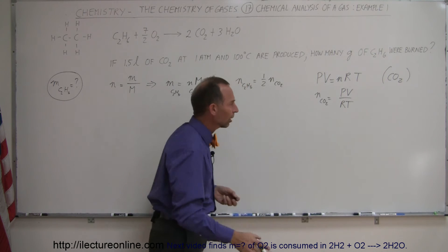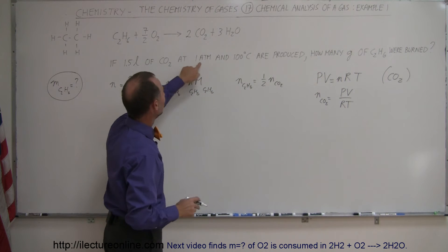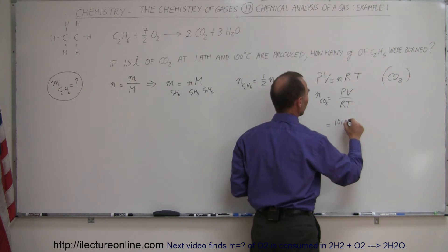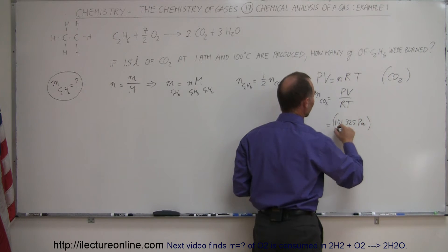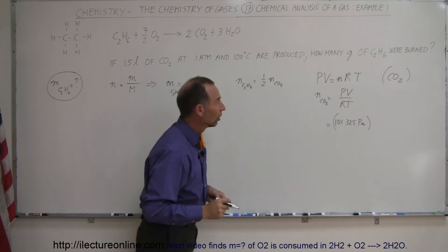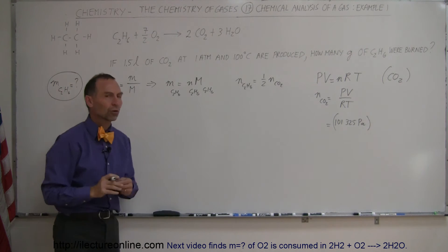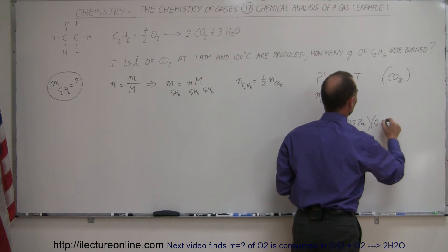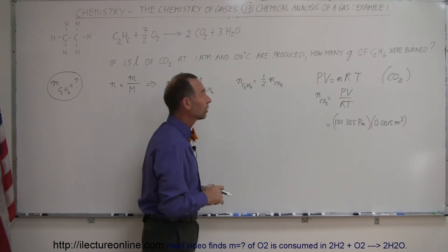So all we have to do is plug in the necessary information. The pressure was one atmosphere, which is equal to 101,325 pascals — that's atmospheric pressure in standard units. The volume of the gas was 1.5 liters, which we have to convert to cubic meters, equal to 0.0015 meters cubed, because there are a thousand liters in one cubic meter.